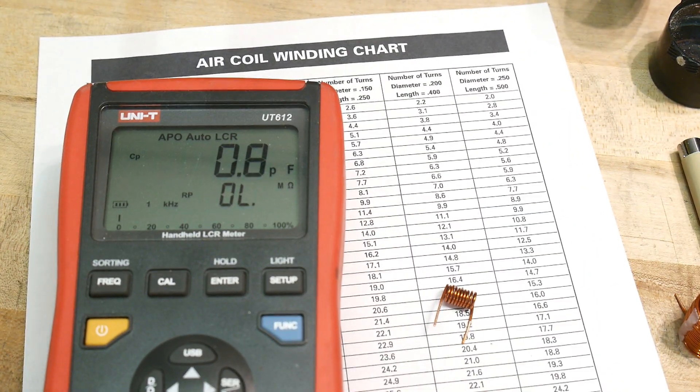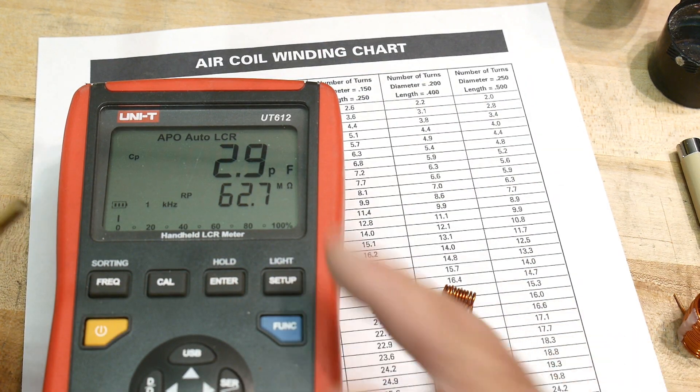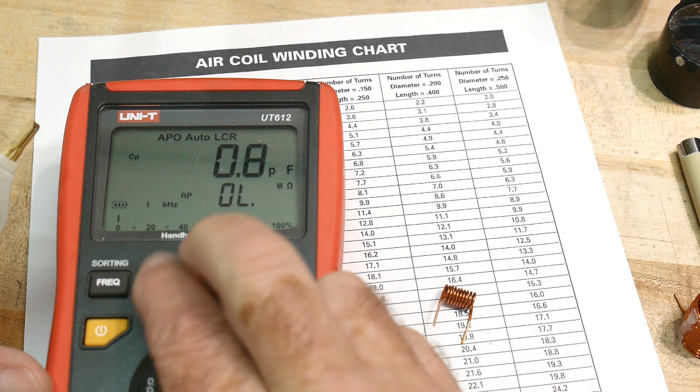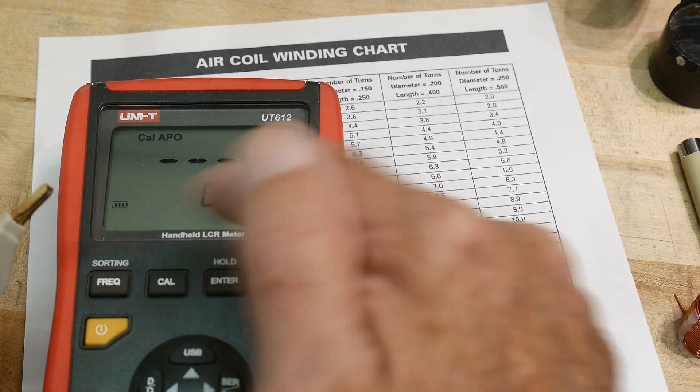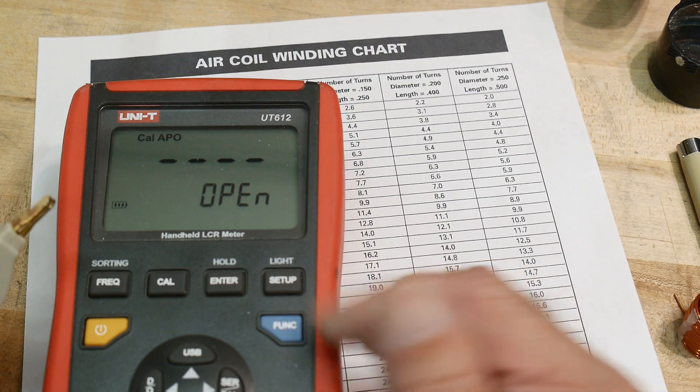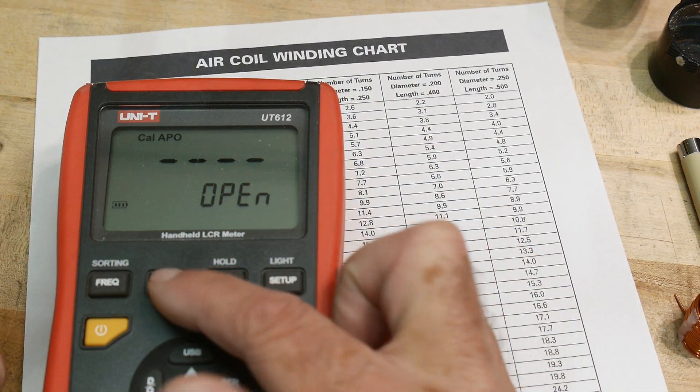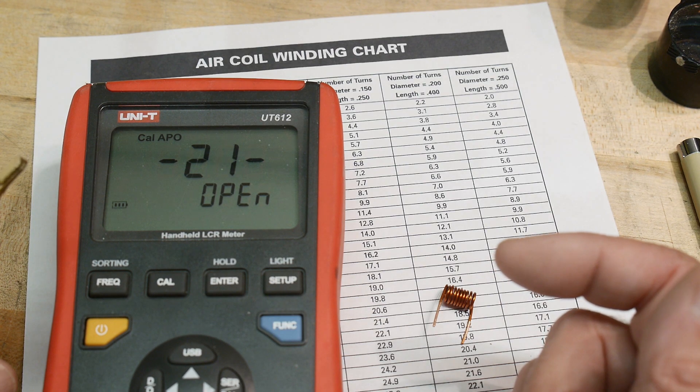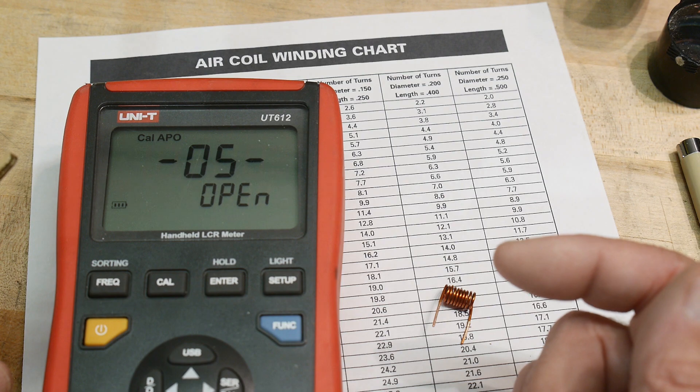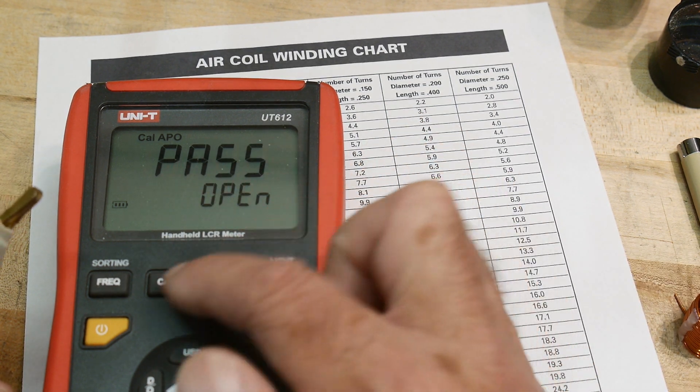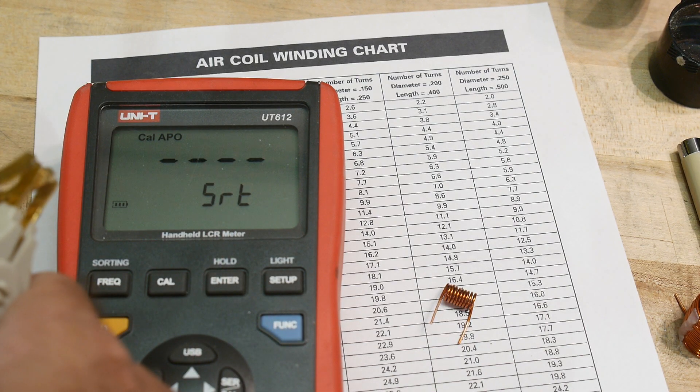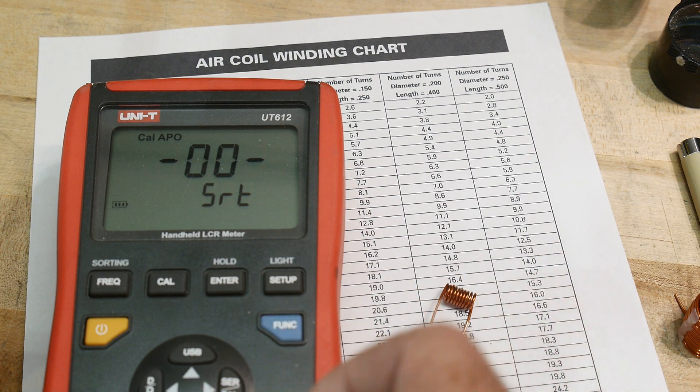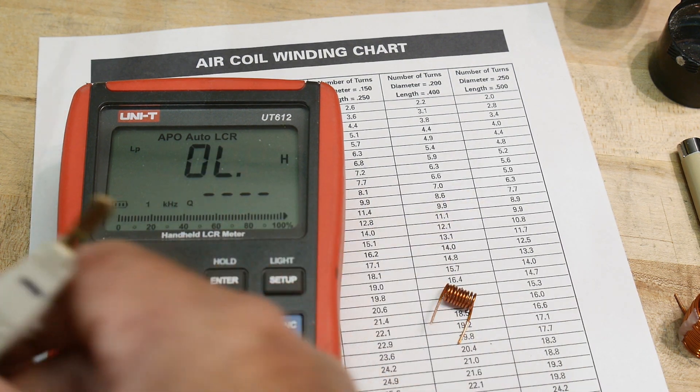All right, so we're going to be measuring pretty small things. So I recommend that when you're measuring small things, you press the cal button on your machine. My cal button's a little bit sticky, so it says do an open. So you don't connect the two and you push the button and it takes 30 seconds. It actually is a pretty long calibration. It says pass, hit the cal button. It says do a short, so I'm going to short these together.